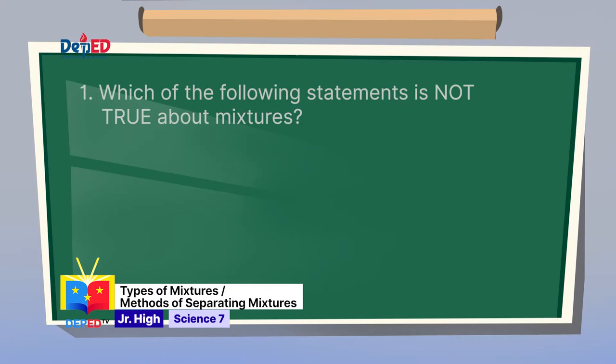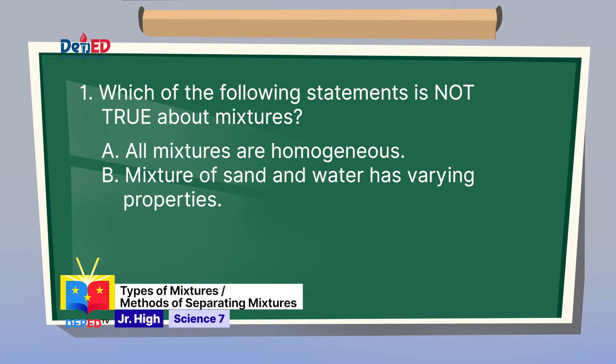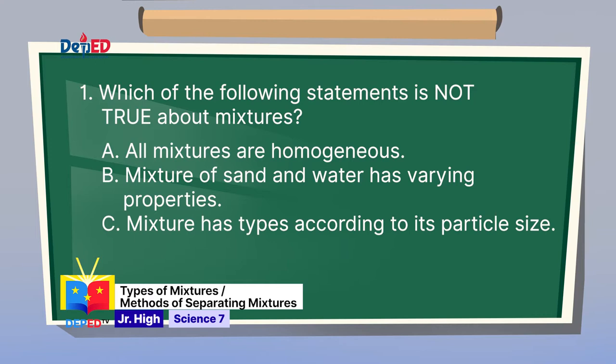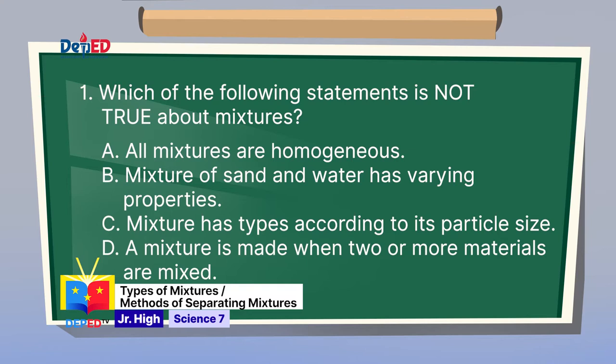Number 1: Which of the following statements is not true about mixtures? A. All mixtures are homogeneous. B. Mixture of sand and water has varying properties. C. Mixtures have types according to particle size. D. A mixture is made when two or more materials are mixed. All statements are correct except letter A — 'All mixtures are homogeneous' is the correct answer for question 1.